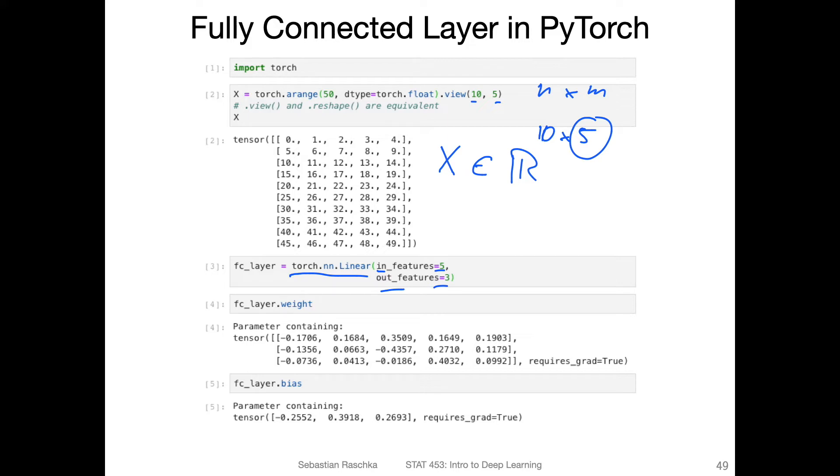Each of these linear layers, when you initialize it here, has attached as an attribute a weight matrix and a bias vector. The weight matrix, you can see it here, is h times m, or in this case, three times five dimensional.